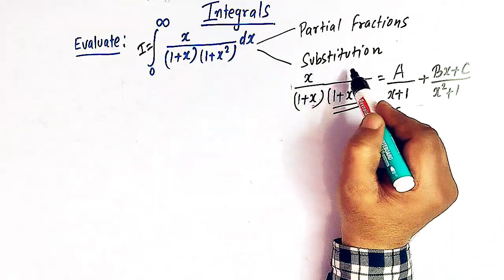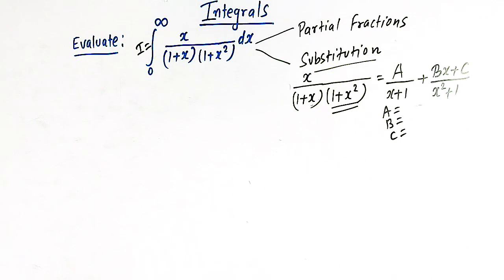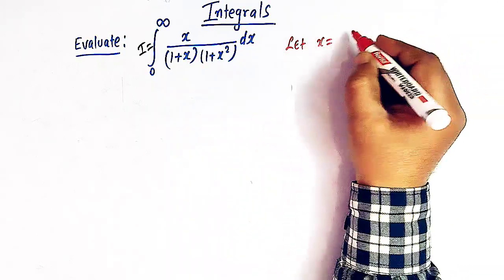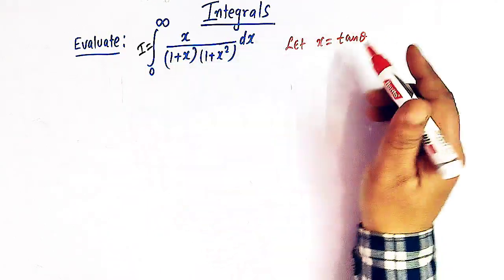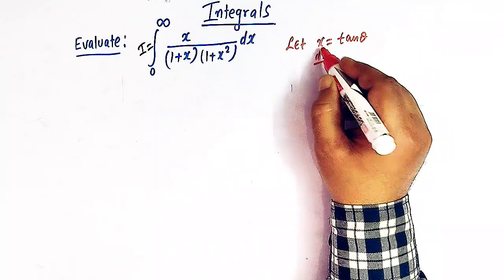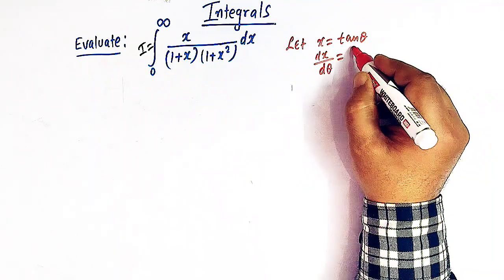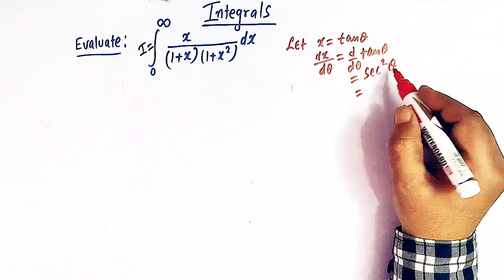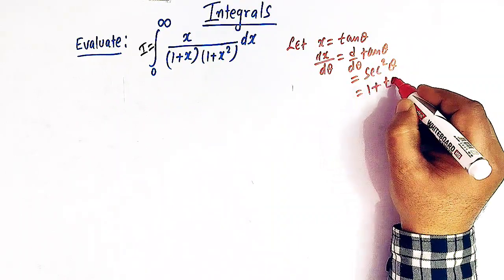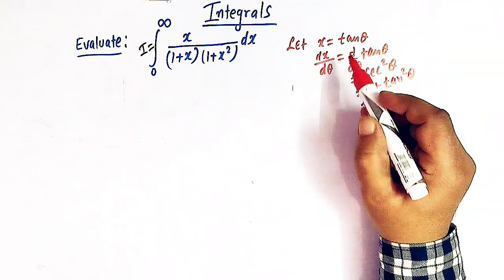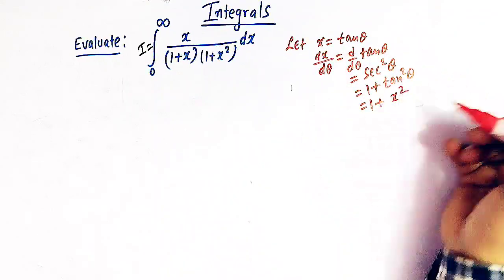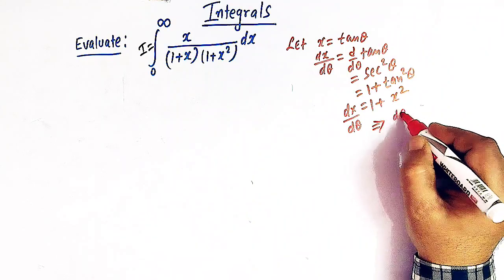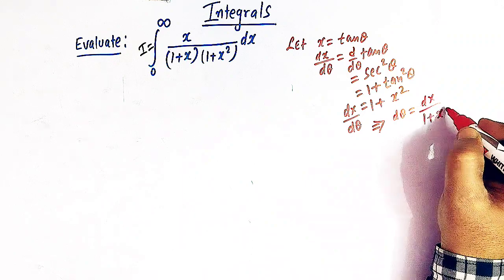Here we are going to use the method of substitution. We take the substitution x equals tan θ, which is the most appropriate substitution here. Differentiating, dx/dθ equals sec²θ, and from trigonometry sec²θ equals 1 plus tan²θ, which is 1 plus x squared. So dx equals dθ divided by (1 plus x squared) — wait, dx over dθ equals 1 plus x squared, so dθ equals dx over (1 plus x squared).